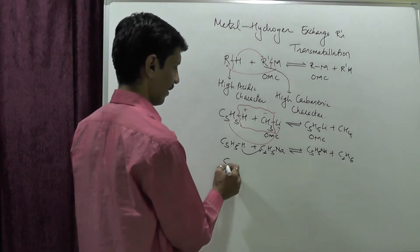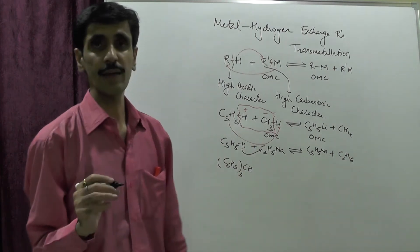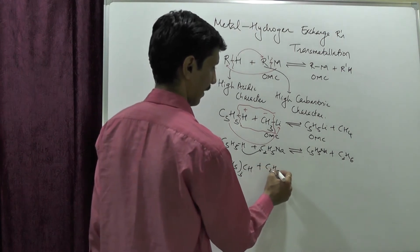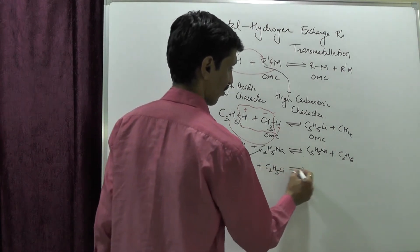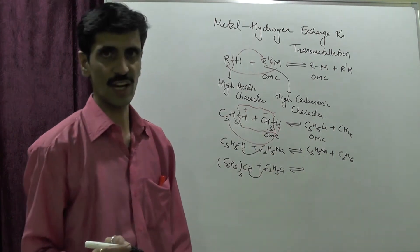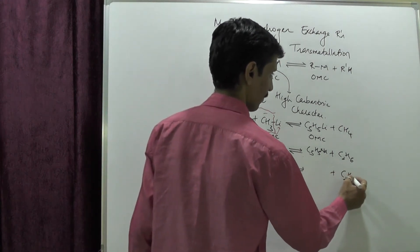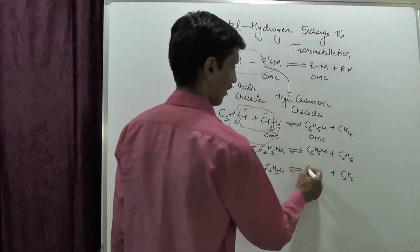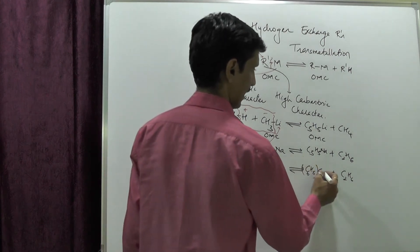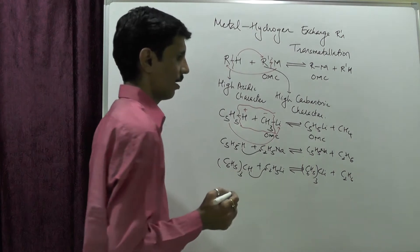The next example: triphenylmethane, (C6H5)3CH, being treated with C2H5Li. The H goes towards the negatively charged carbon of the ethyl group, and we get C2H6. We are left with (C6H5)3CLi, which is an organometallic compound.